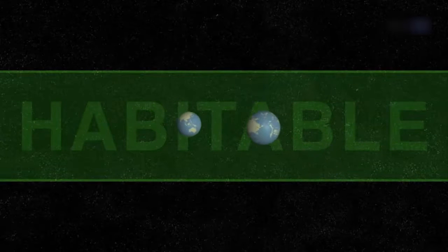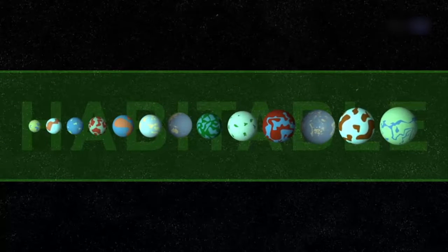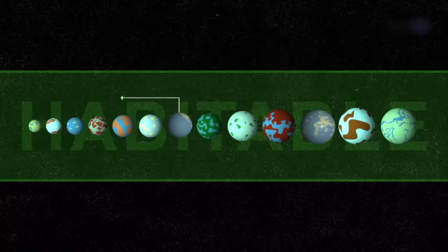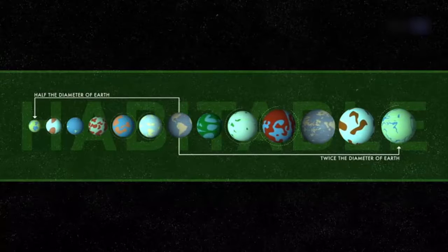Kepler-452b isn't the first exoplanet found in a habitable zone. Indeed, about a dozen such worlds in this size range have been discovered so far. That is, 10 to 15 planets between one-half and twice the diameter of Earth, depending on how the habitable zone is defined and allowing for uncertainties in measured planetary sizes.